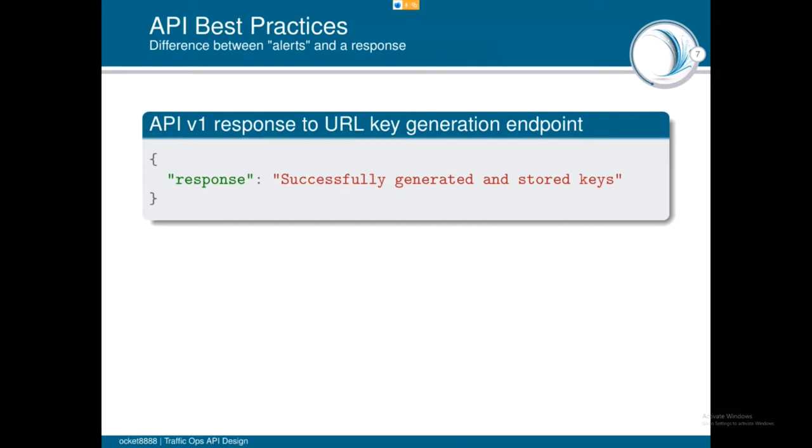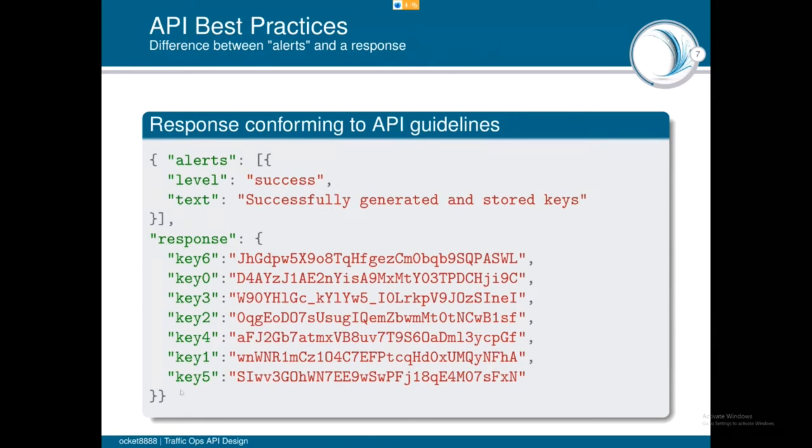Another minor thing is that a lot of API responses in version one of the API will show you these strings as success messages. And if this were designed today, what it would look like according to the API guidelines is something more like this, where it returns the actual object you made. And it returns this alerts array, which is the standard way that Traffic Ops endpoints are supposed to communicate client hints. So that way you can write more robust tests because you don't want to key off of exactly what this text is.